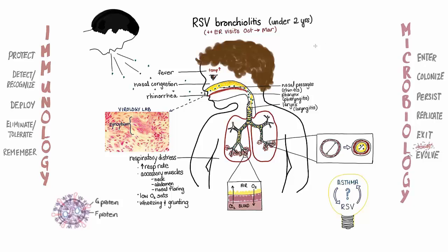The good news is that RSV doesn't change much from year to year. While we don't yet have an effective vaccine to routinely prevent RSV infection in all children, we do have a way of protecting some high-risk babies by giving them passive antibody protection during the winter months. Vaccination involves triggering the immune system to mount its own long-lasting response by exposing it to an inactivated version of the pathogen, whereas passive antibody protection involves giving a child immunoglobulins typically made to fight a virus like this. The downside is that these passive antibodies don't last very long, so they need to be given monthly to high-risk children during the winter months.